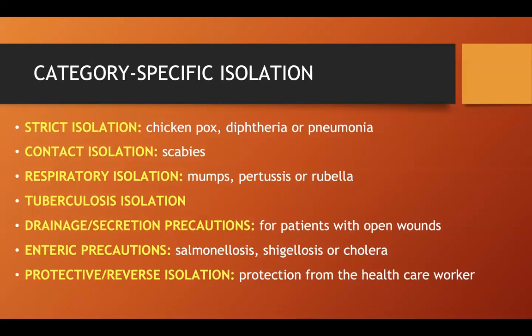Tuberculosis isolation is specifically for patients with TB. Drainage or secretion precautions — also called wound and skin precautions — are given to patients with open wounds resulting from abrasions, accidental skin cuts, surgery incisions, or infected bed sores. Enteric precautions are for patients with severe diarrhea due to bacteria like Salmonella, Shigella, or Vibrio cholerae.